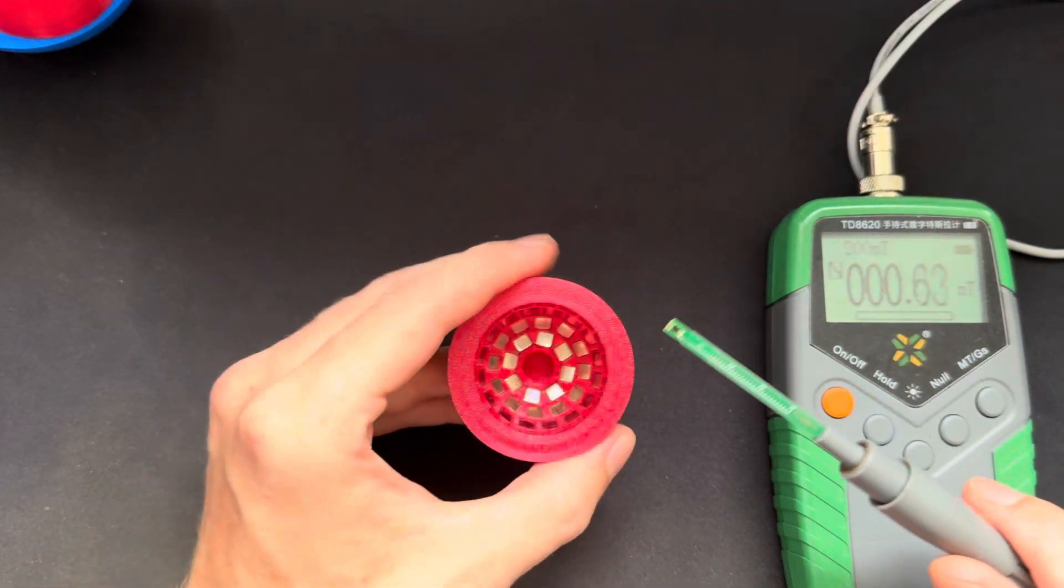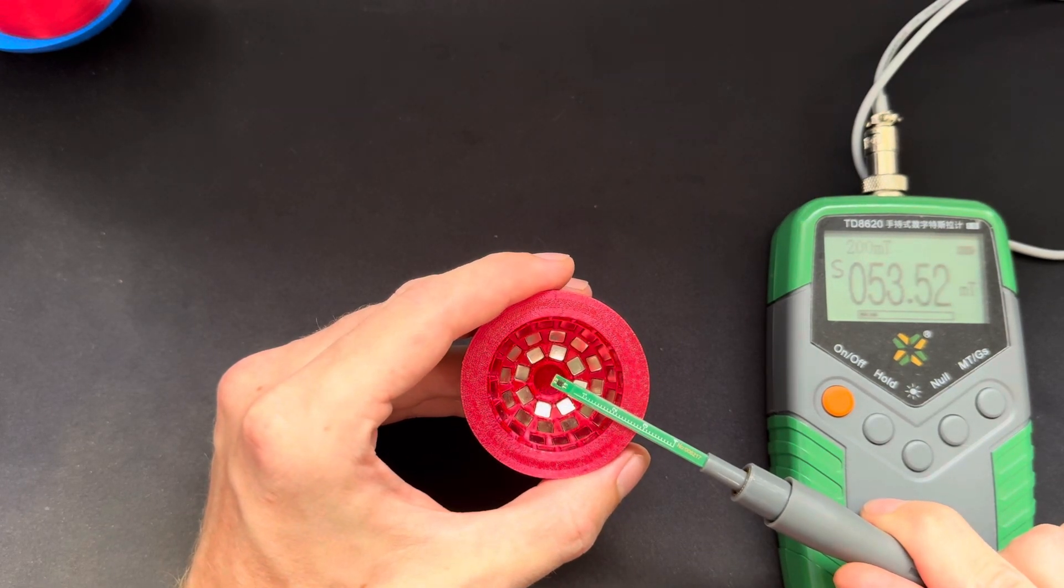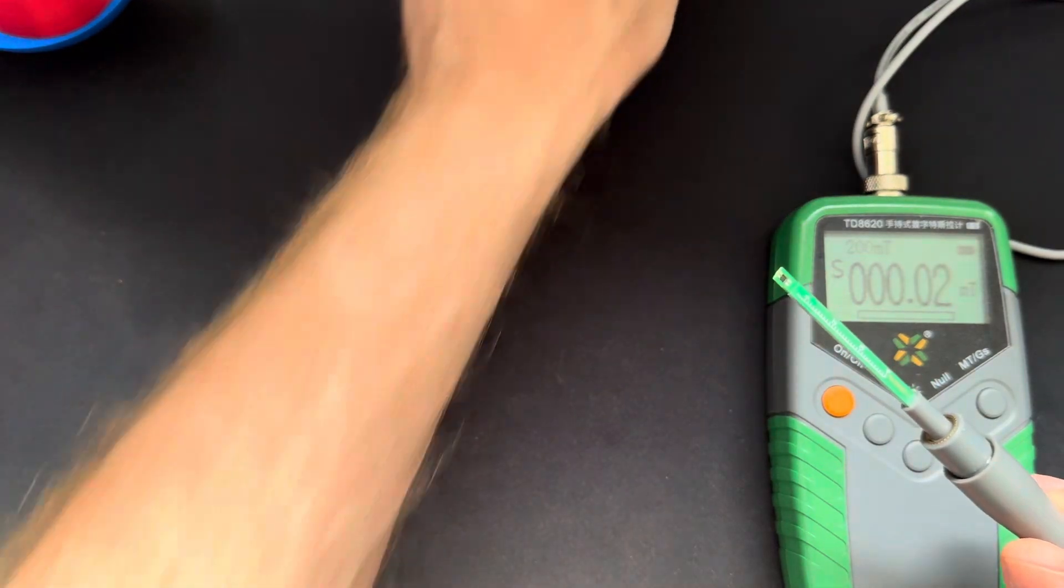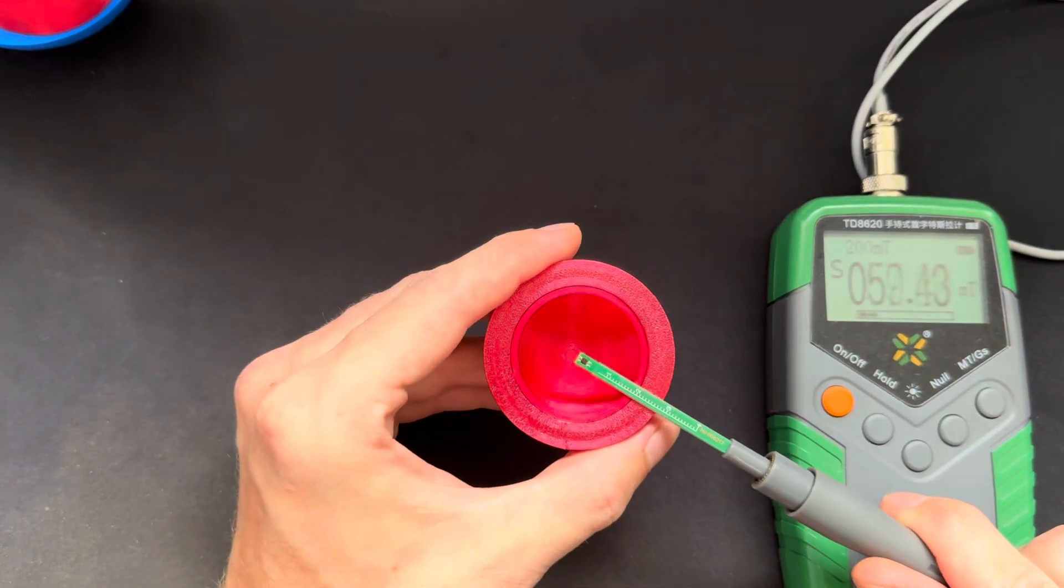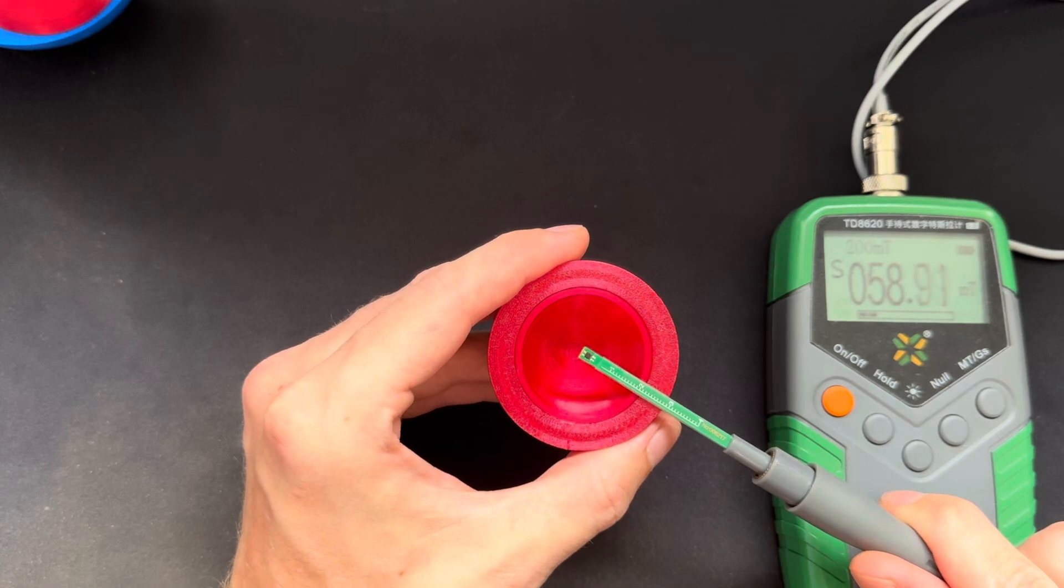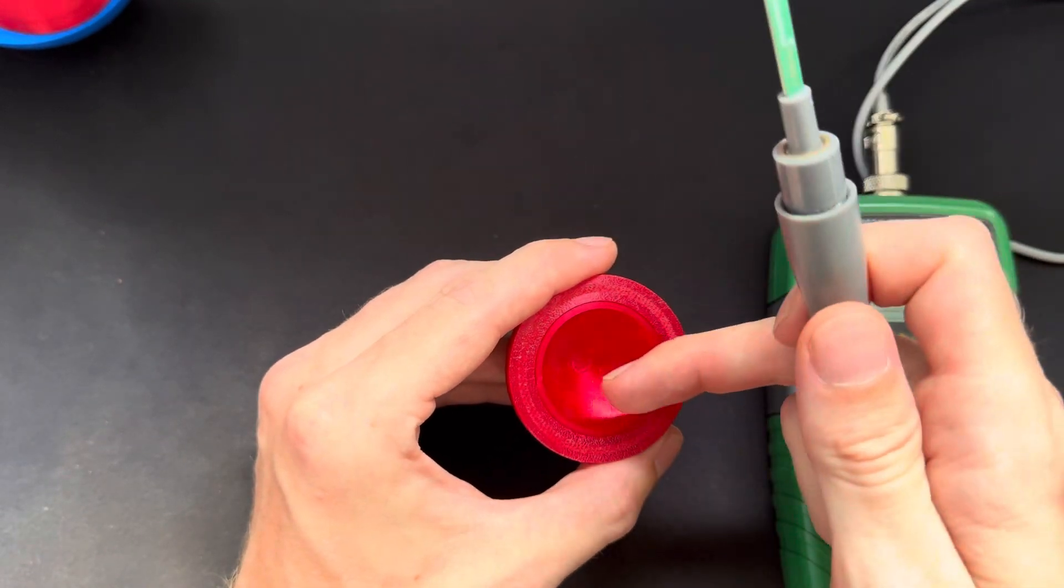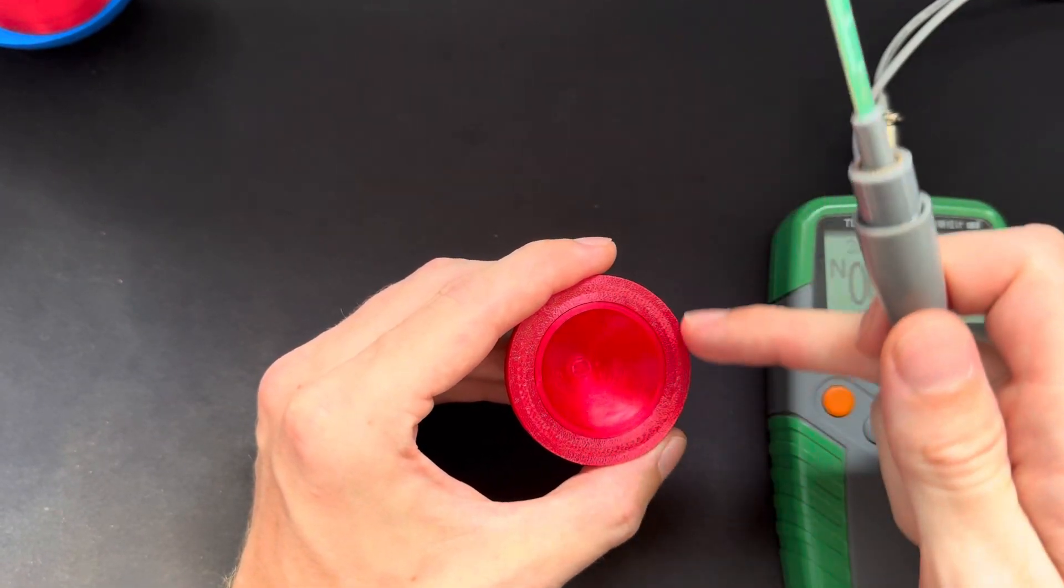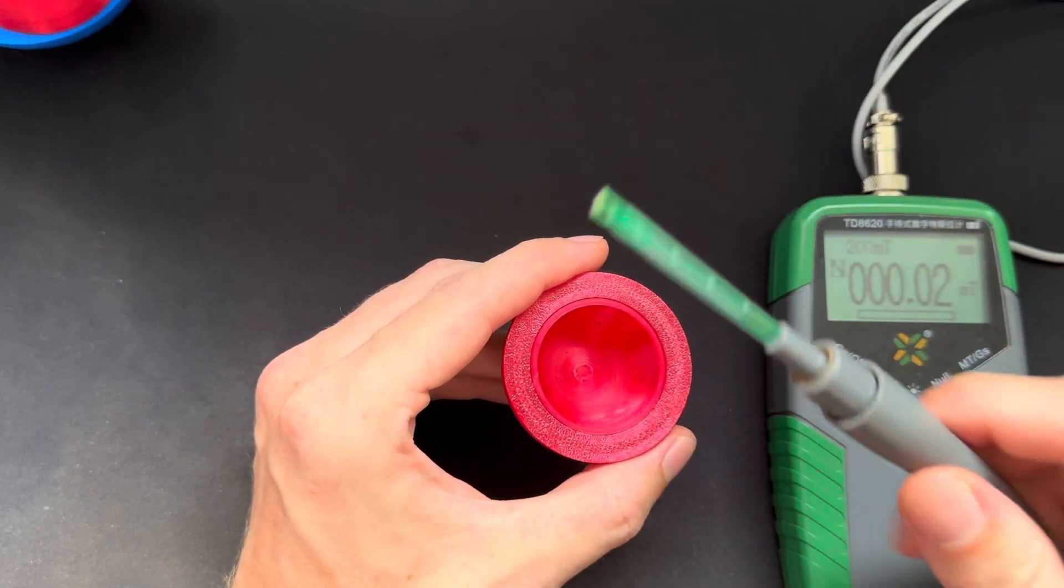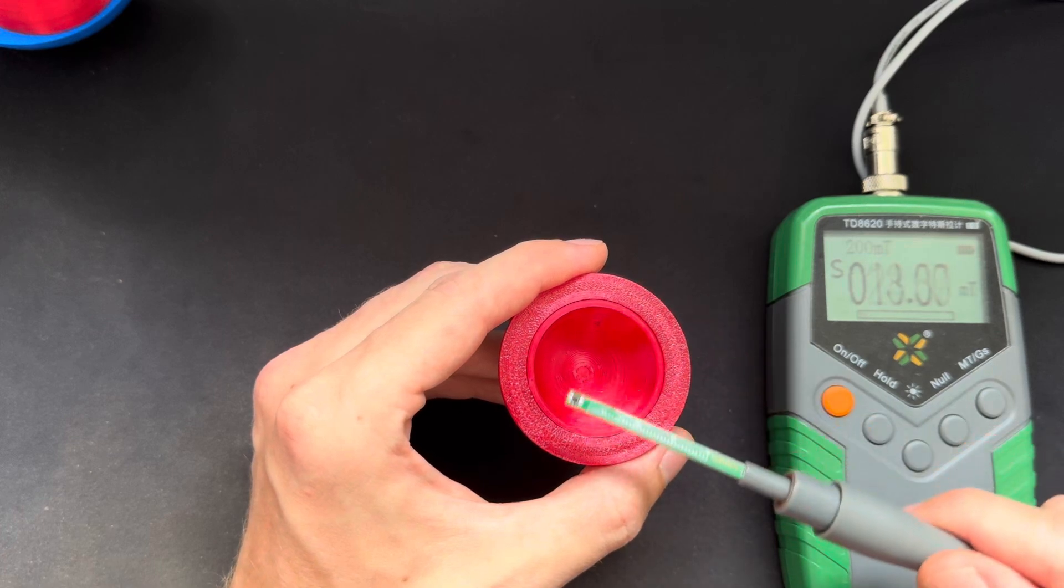And now I will show you some readings right at the center point here. So this is the original design and we have around 53 milliteslas on this point. Then with the modified design we get 59 millitesla. So the center magnet also facing south pole to the center which amplifies the field on the outside kind of a bit. And also what I've measured is that the field extends quite a bit further.